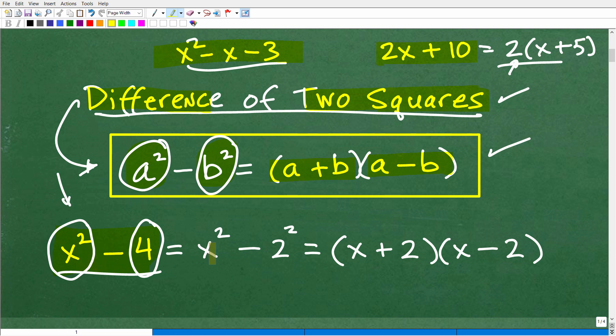Well, we can write this problem, or think of it this way, x squared minus 2 squared. So when we have x squared minus 4, and we write it as x squared minus 2 squared, well, this x becomes like our a, and this 2 right here becomes like our b.